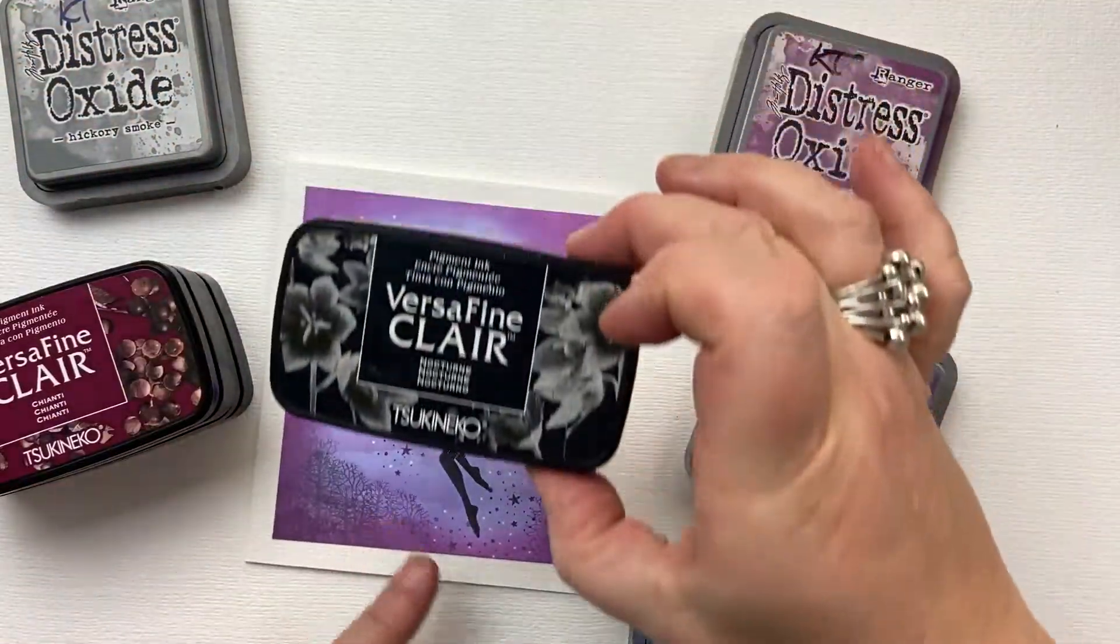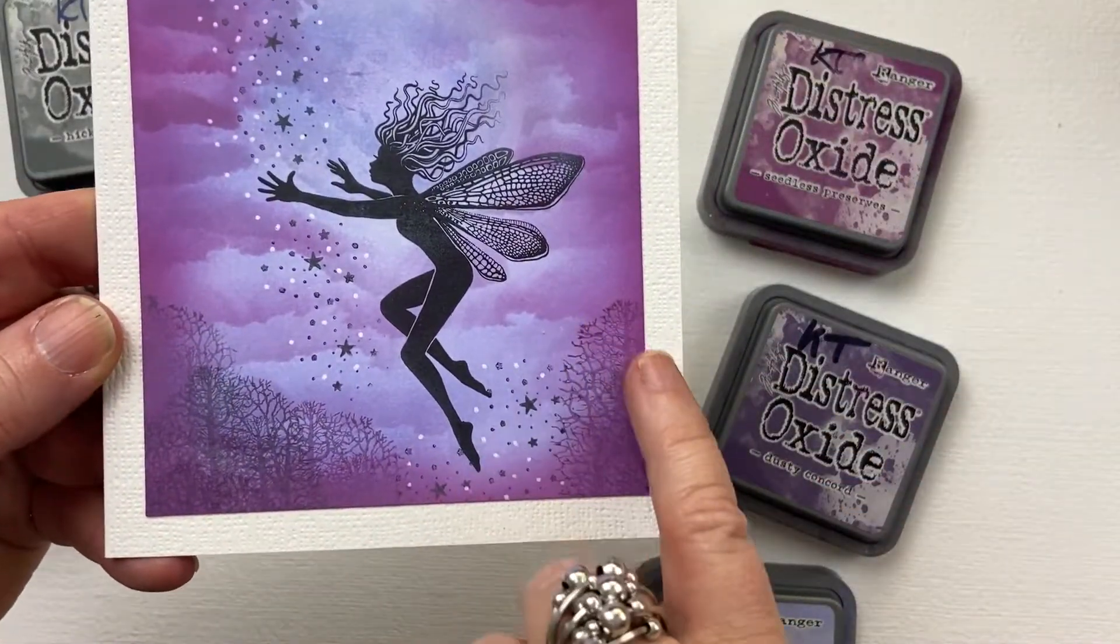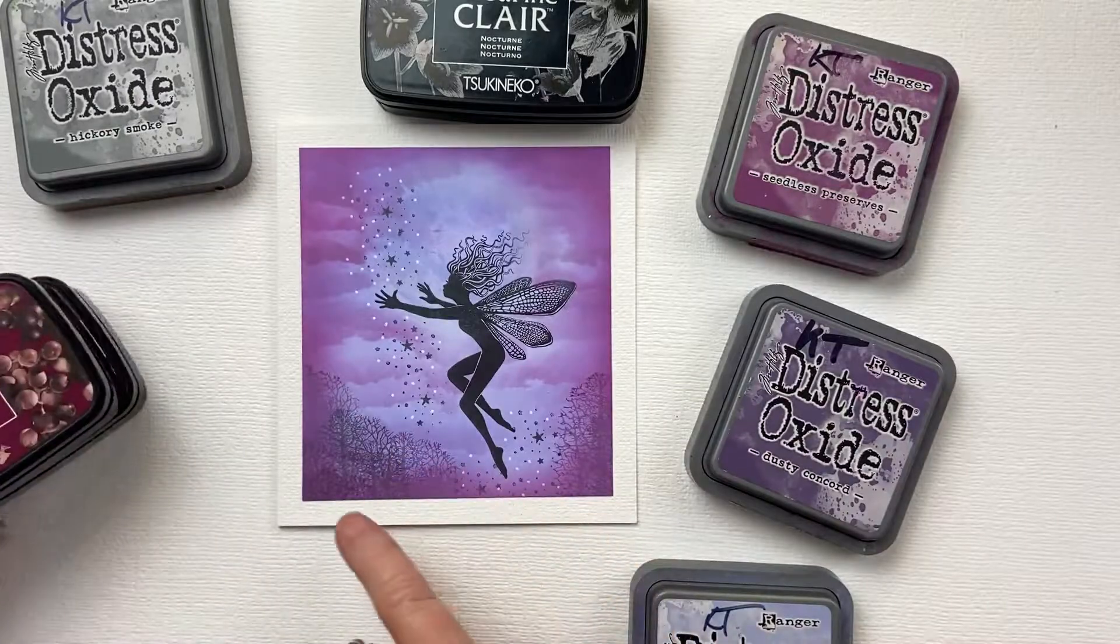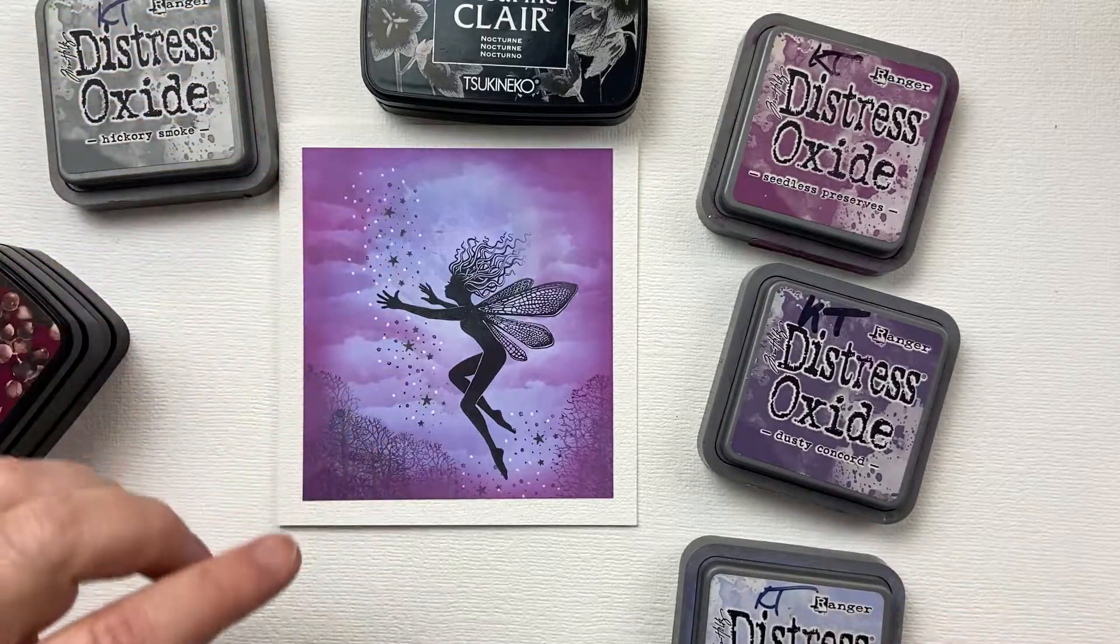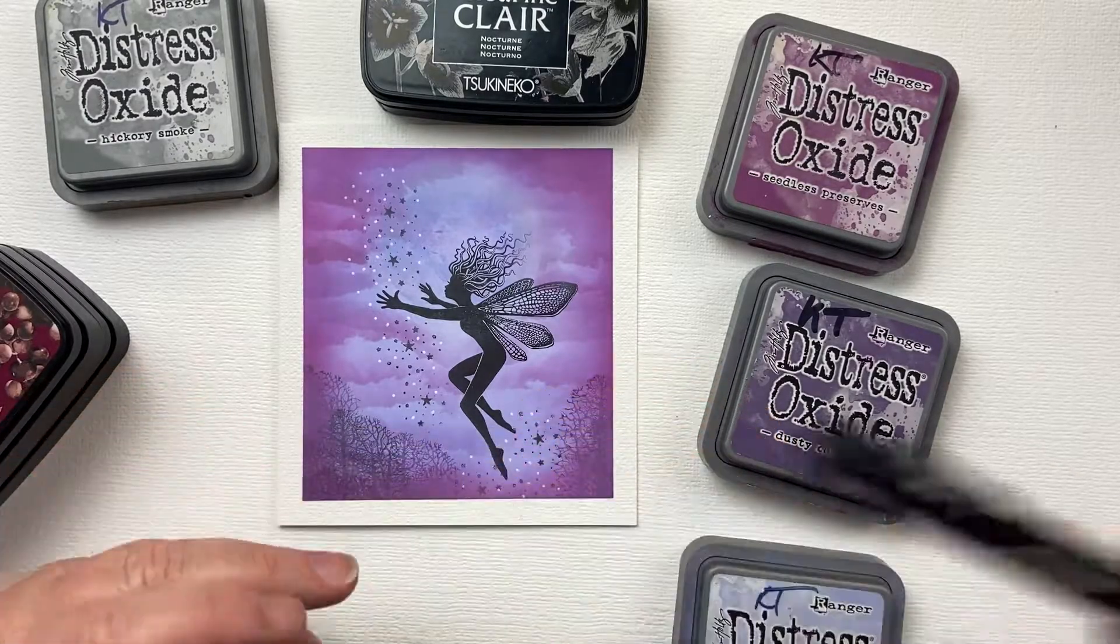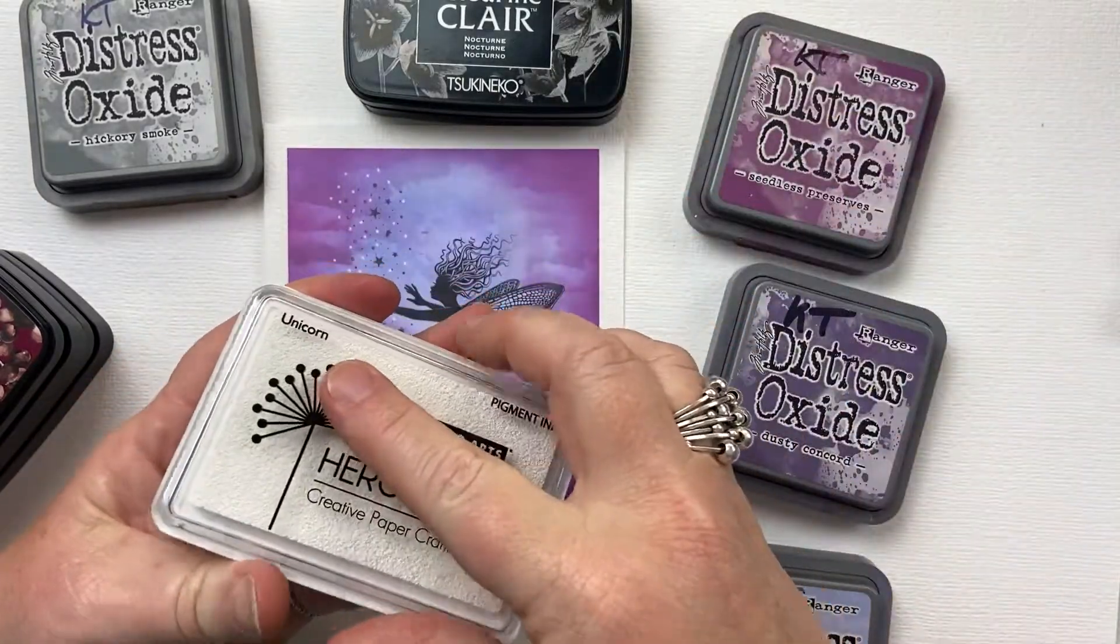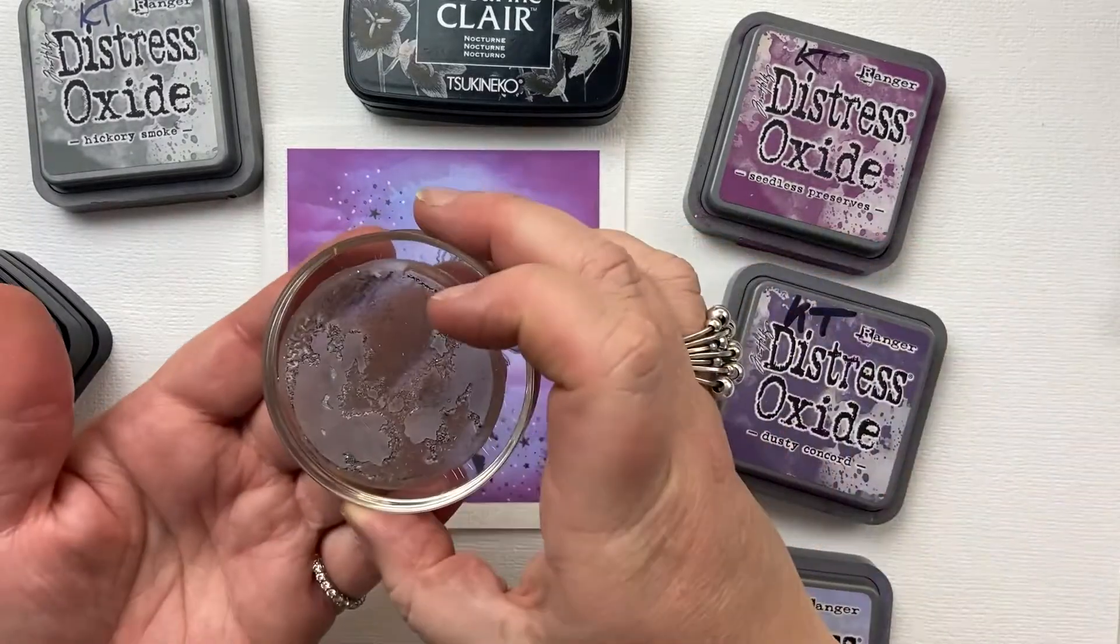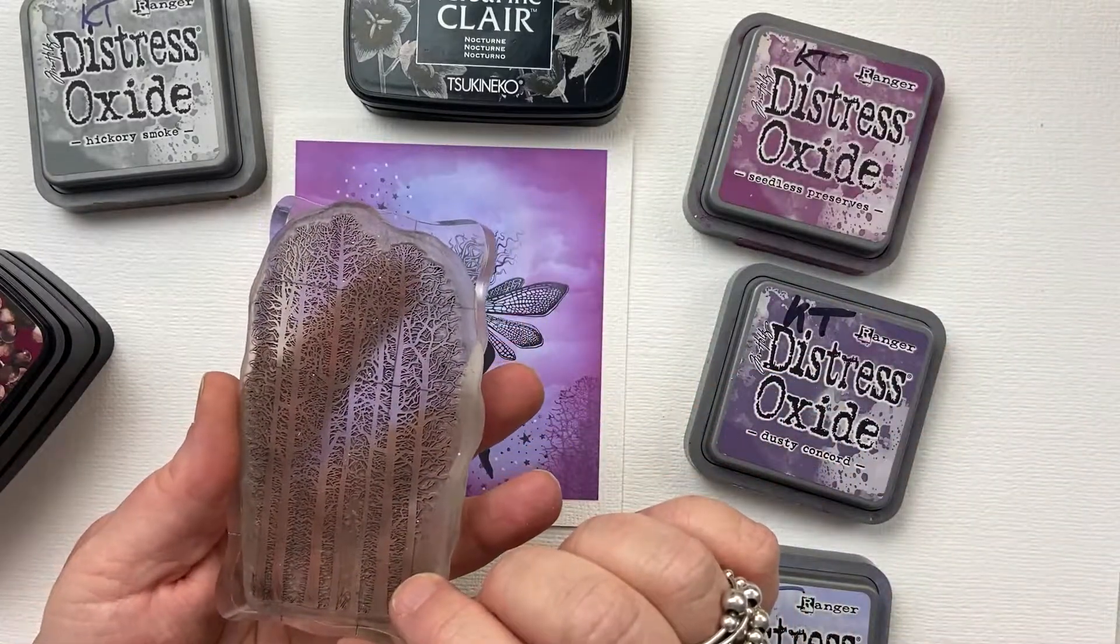For our main image I'm using Versafine Clear Nocturne and then for the trees to create this sort of misty hazy look I'm using Versafine Clear Chianti Morning Mist with a bit of hickory smoke around the edge to create that little mist. I've got miniature star stamp in black with my white Posca pen. I'm also using a bit of white ink pad. You can use gesso, white crayon just to create a soft effect around the moon. I've used the moon stamp and here my trees I'm using Forest Scene. It's a lovely set of trees.